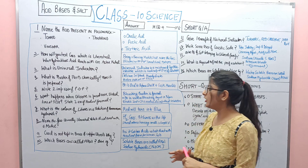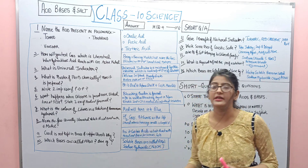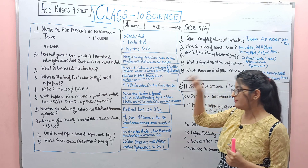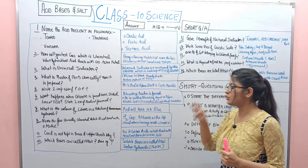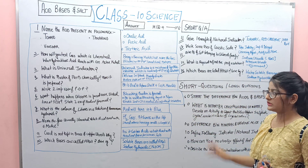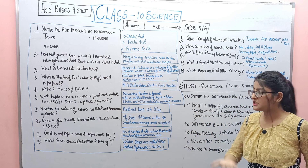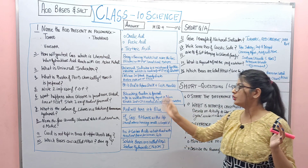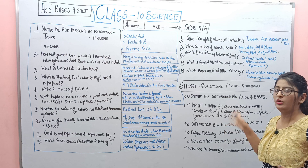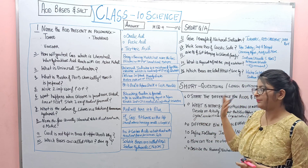Question 10: When we put litmus paper in a solution of ammonium hydroxide, what is the change? We all know the color changes from red to blue — it will turn from red to blue.